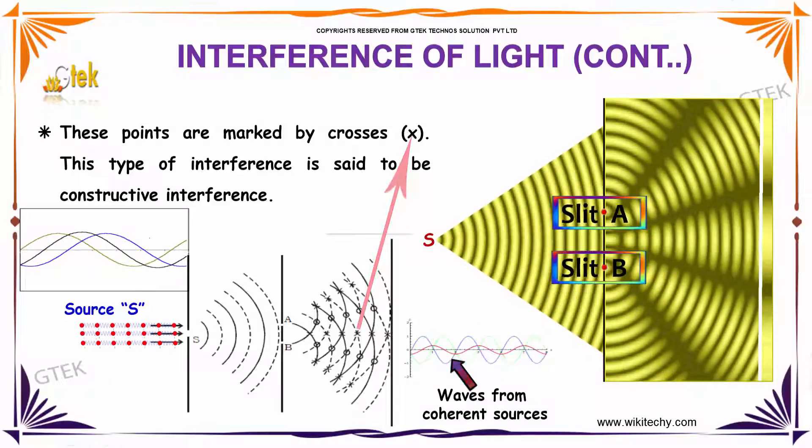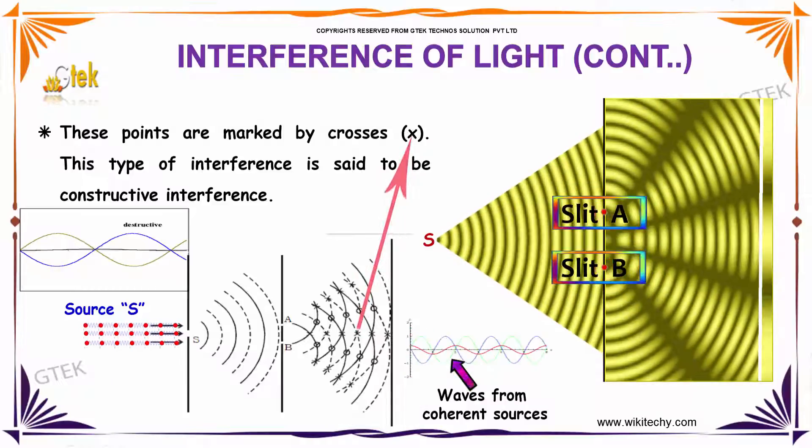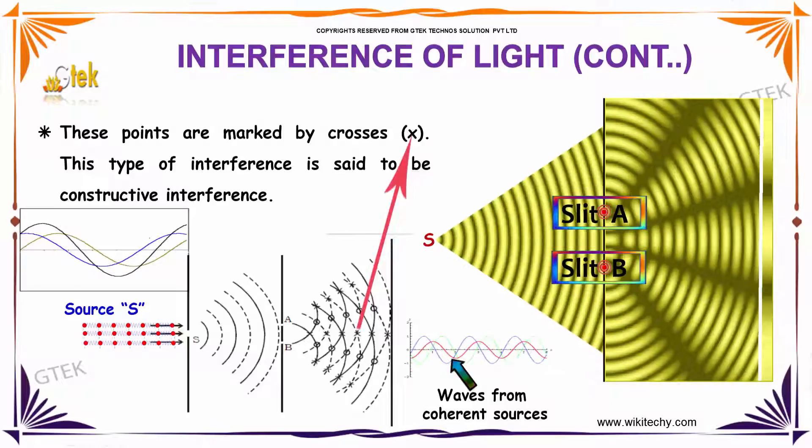These points are marked by crosses X. This type of interference is said to be constructive interference.